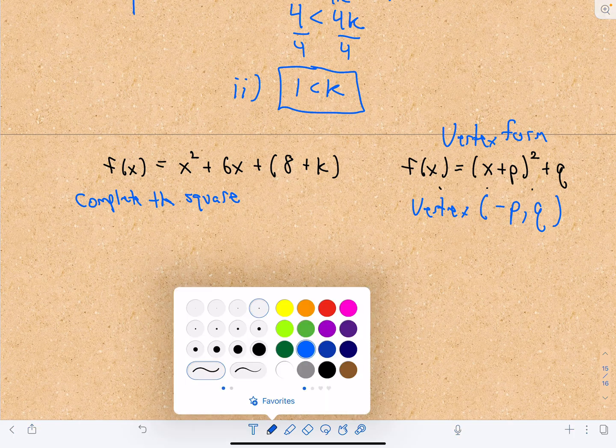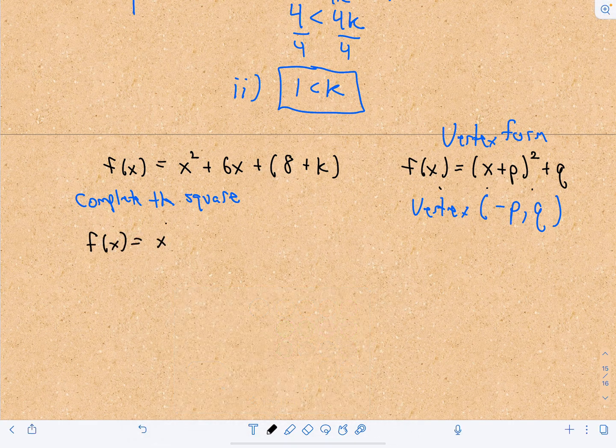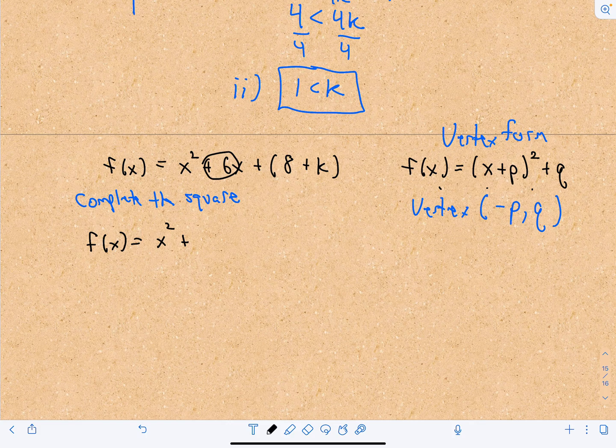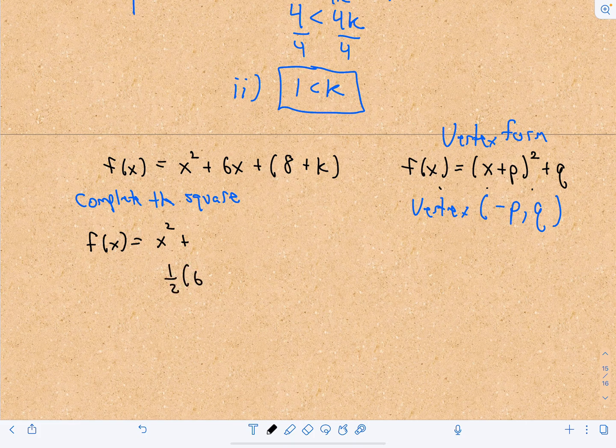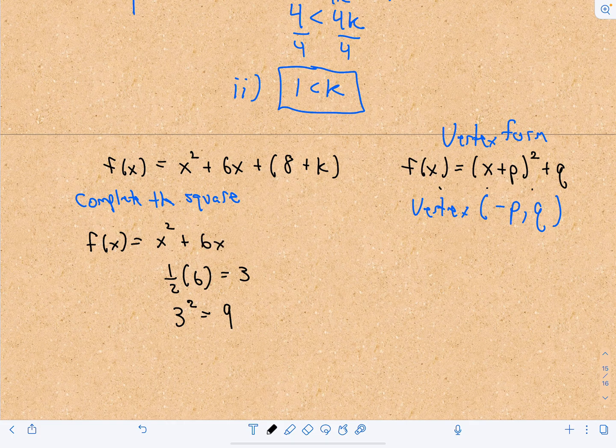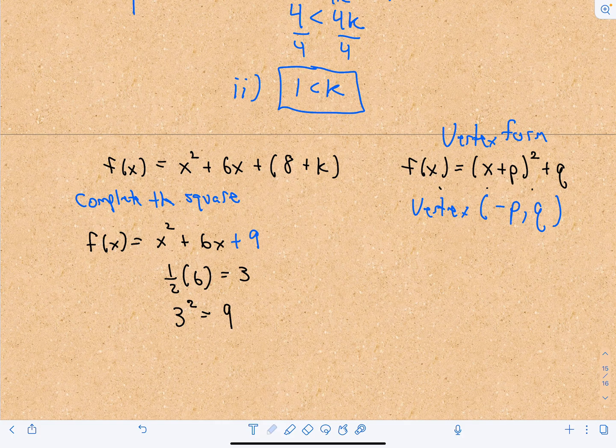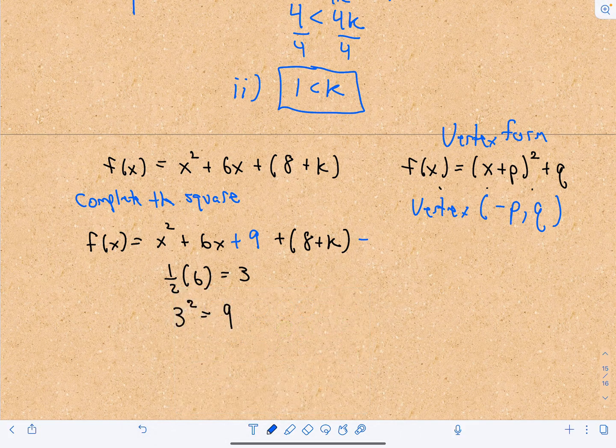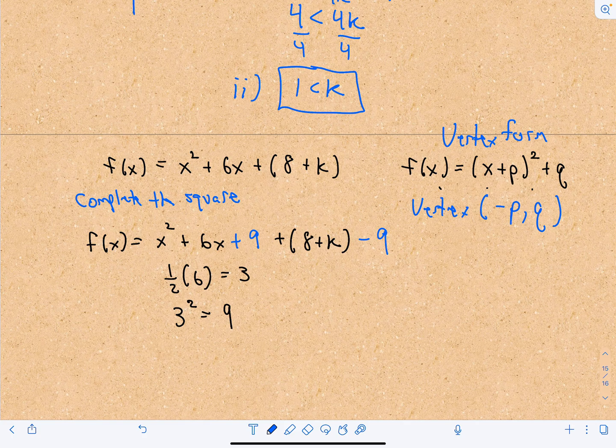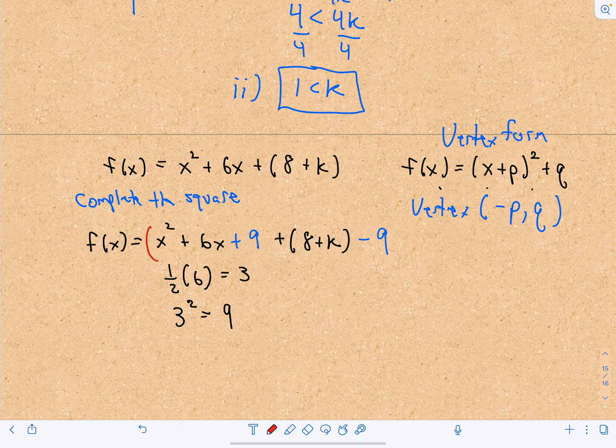So to complete the square, what we do, well, in this case, there's a coefficient of one in front of x squared, so that's no problem. We take half of the coefficient in front of our term involving x. So that's going to give us three. So we take one half of that number and then we take that number and we square it. So I'm going to have x squared plus 6x. So 3 is going to be my new number that I'm going to throw inside of here. And then we still have our plus 8 plus k. But to keep this function equivalent to what it was before, I'm adding 9 out of nowhere. Well, I've got to subtract 9 to keep everything even. So now the idea is we write the first three terms as a perfect square.